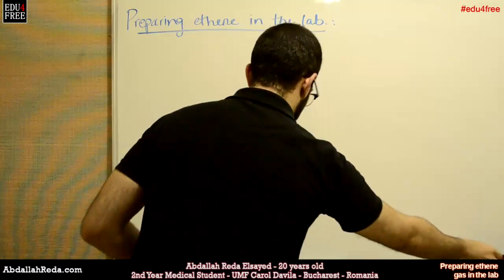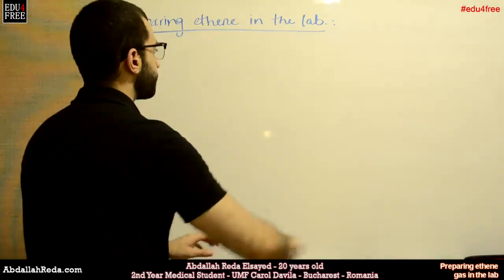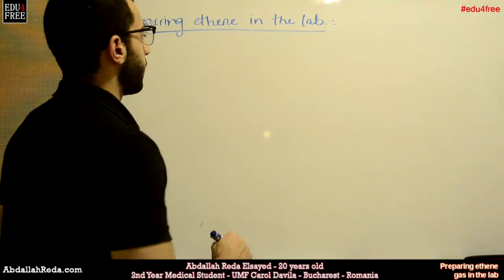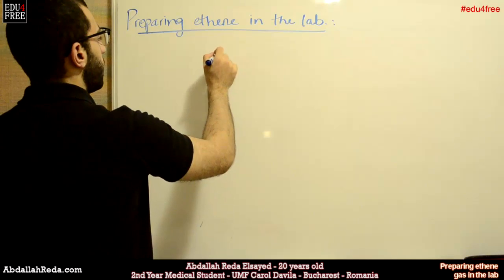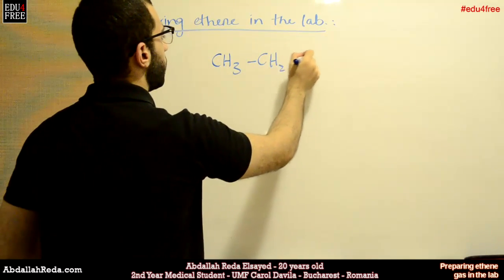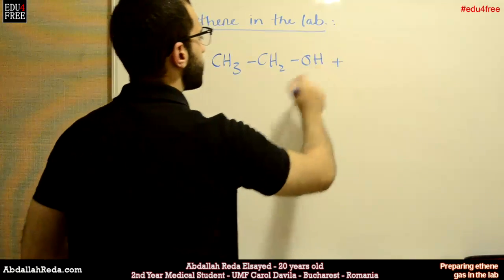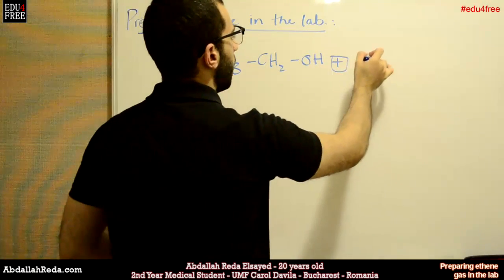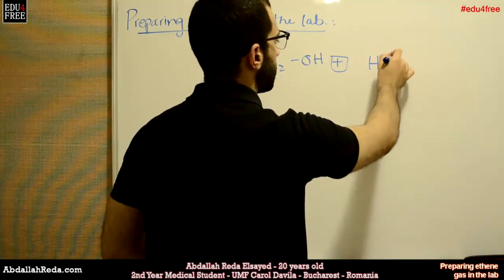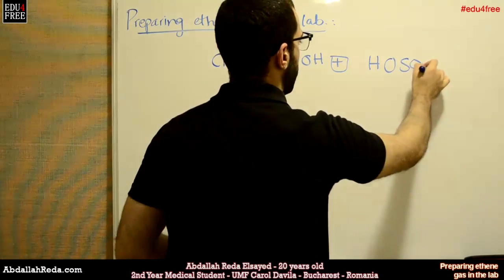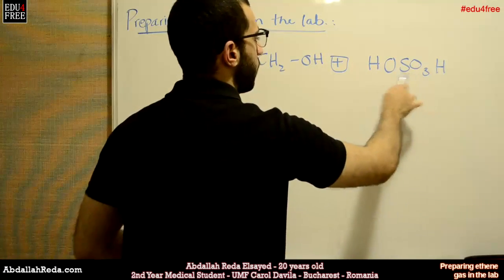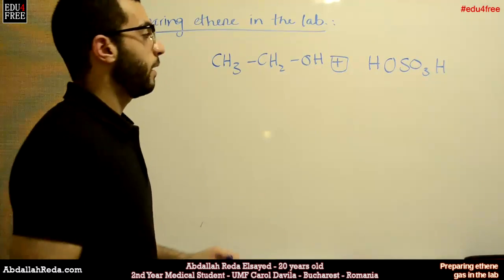We said that we'll start with a mixture of ethanol and concentrated sulfuric acid. The formula of ethanol is CH3CH2OH plus concentrated sulfuric acid. We write sulfuric acid like this: HOSO3H, which is the same as H2SO4.